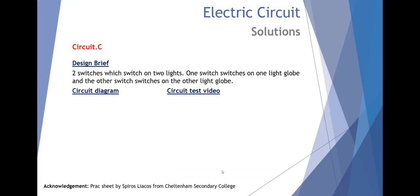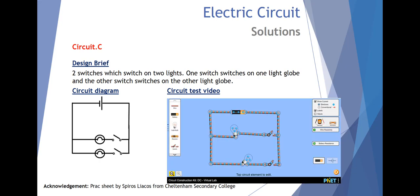Circuit C, two switches which switch on two lights. One switch switches on one light globe and the other switch switches on the other light globe. One for one and one for the other.